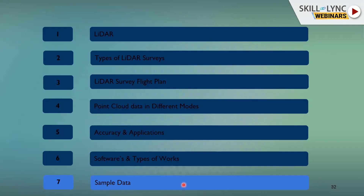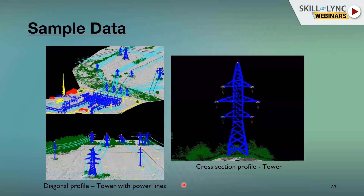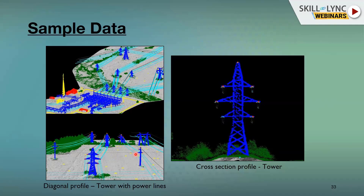Sample data from a transmission line project is shown. Blue towers or substations, yellow for buildings, light blue for power lines, and green for vegetation areas are visible. These are the data classification outputs generated using TerraSolid products. You can also perform 3D power line vectorization and danger point analysis using these tools.